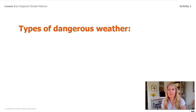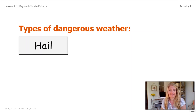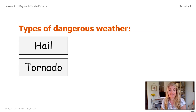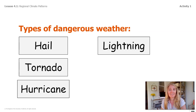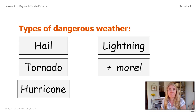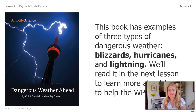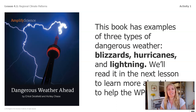Here are a few different types of dangerous weather that I thought of: hail, tornadoes, hurricanes, lightning, and many more. If you thought of a different one, that's great — you can add that to your list. This book has examples of three types of dangerous weather: blizzards, hurricanes, and lightning. We are going to read it in the next lesson to learn more about how we can help the WPO.